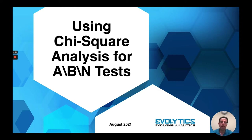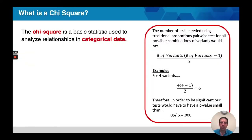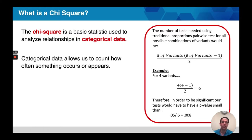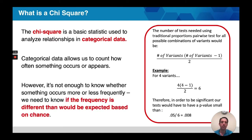Let's start by talking about what a chi-square test is. A chi-square test is a basic statistic that is used to analyze relationships in categorical data. Categorical data simply counts — it's how often something occurs or appears. But it's not simply enough to know how often something appears. We need to know whether the frequency in which it appears is different from what we would expect based on chance.